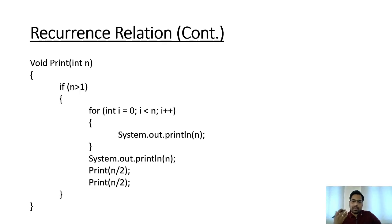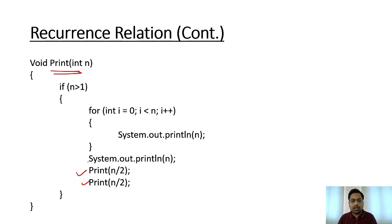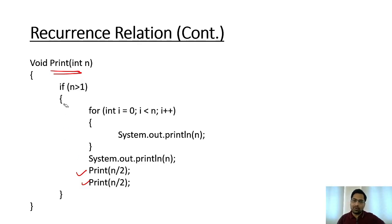Now we look at a piece of code and learn how to write the recurrence relation from recursion. Within the function, we are calling the same function two times, but we cannot say the complexity is big O of two directly. We have to write a mathematical model, which helps us find the time or space complexity.